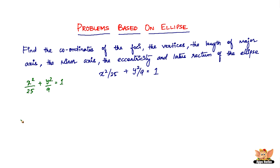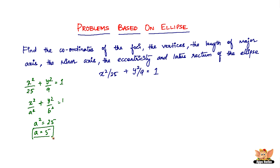So the equation is x² / 25 + y² / 9 = 1. How do you conclude whether this is of the form x² / a² + y² / b² = 1 or x² / b² + y² / a² = 1? In any ellipse, the major axis is always represented by a and the minor axis by b. Since 25 is greater than 9, it is of the form x² / a² + y² / b² = 1.